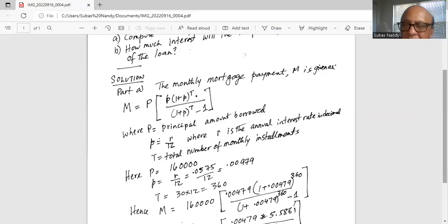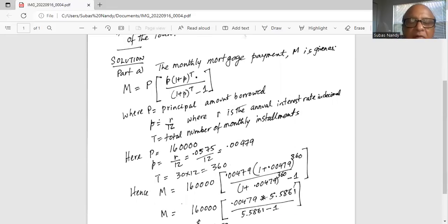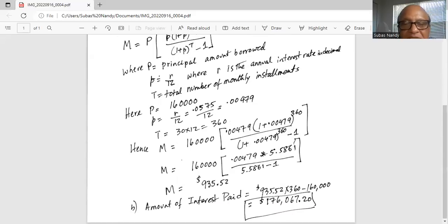We substitute the information into the formula. We have 160,000 in parentheses, in the numerator 0.00479 times 1 plus 0.00479 exponent 360, divided by in parentheses 1 plus 0.00479 exponent 360 minus 1. This reduces to 160,000 times 0.00479 times 5.5861, with the whole numerator divided by 5.5861.